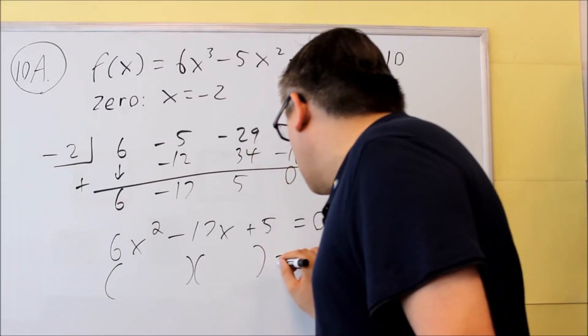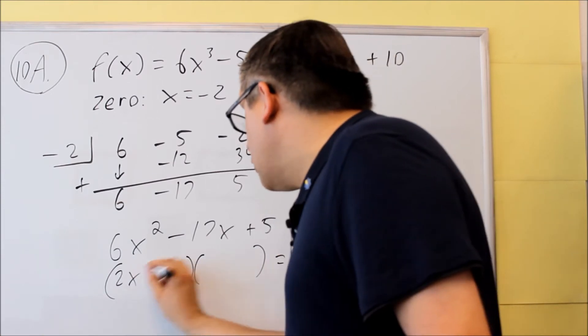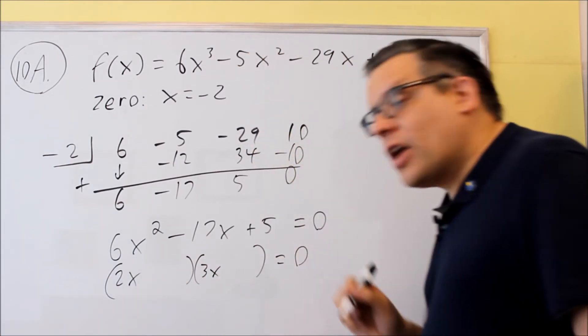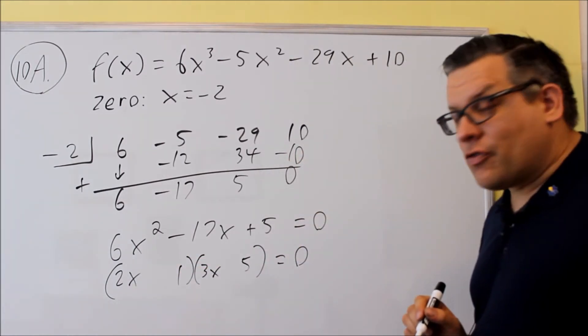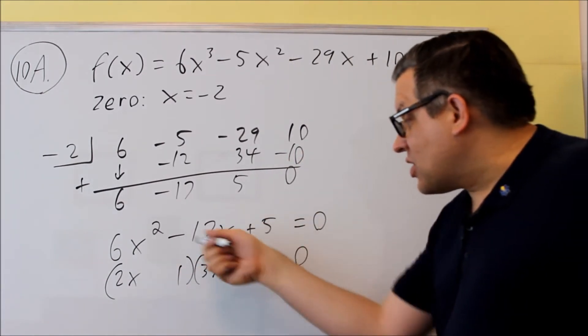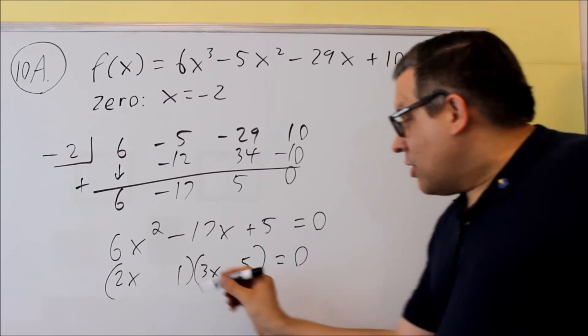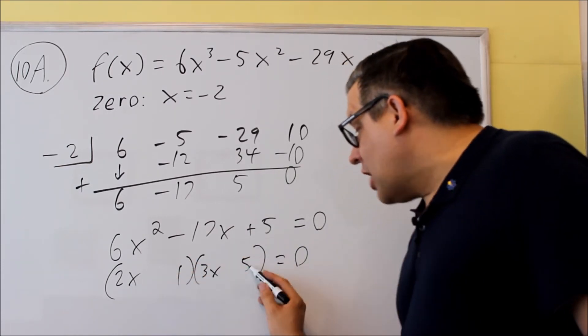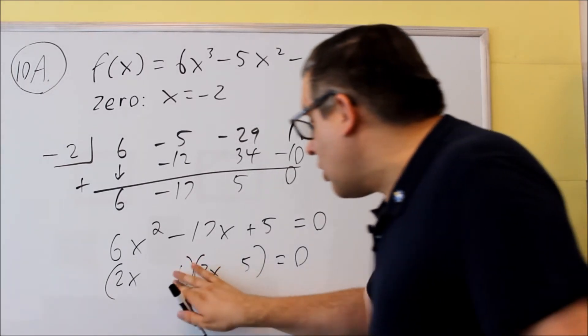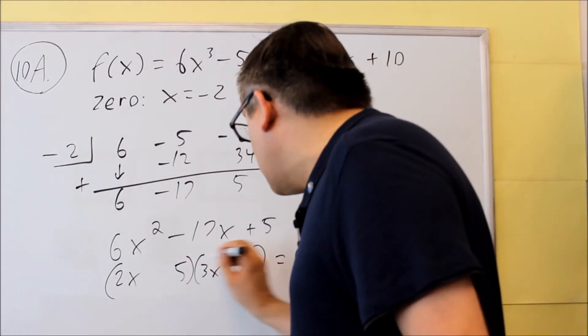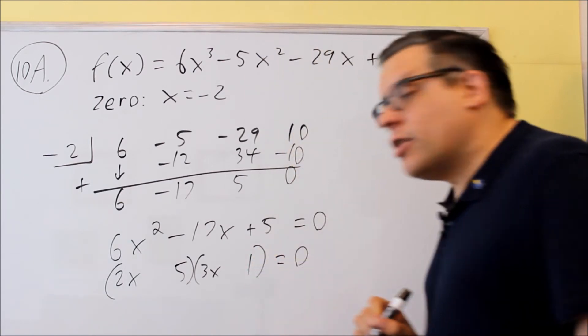So if I factor it, I get 2x and 3x. I can use 1 and 5, the only factors of 5, and then I want to get 17 in the middle. Okay, so if I do 2 times 5, that's 10 and 3 is 13. That's the wrong combination. So I'm going to switch the order here and try that.